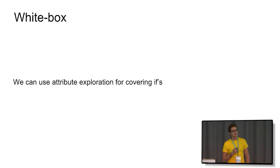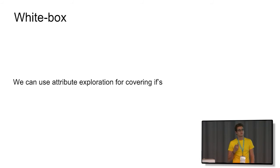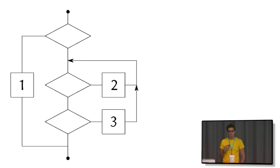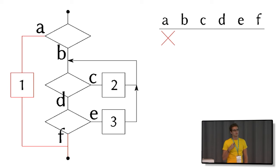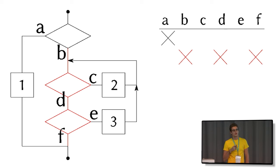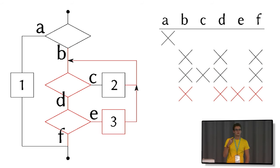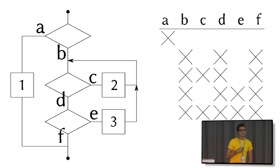Another nice approach is to use formal concept analysis for software testing through a white-box technique. Usually a program has a set of if-statements leading to a return statement. We assign labels to each branch statement and then see all paths from the beginning to the end — and this is still a formal context. You have a set of objects corresponding to paths across your program, and on the other hand labels for which if-branches you covered. You do the intuitive procedure of covering all paths in your graph, and the tests you should run are shown on the right-hand side.